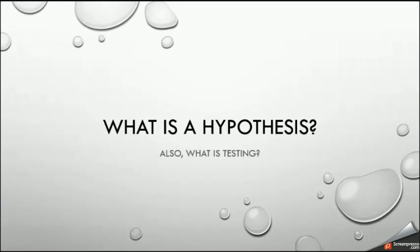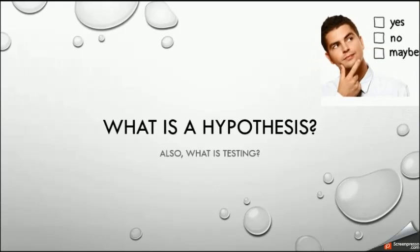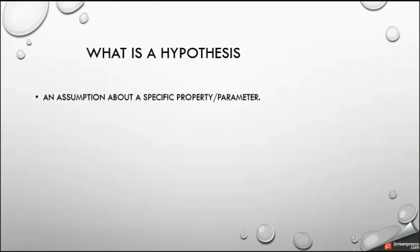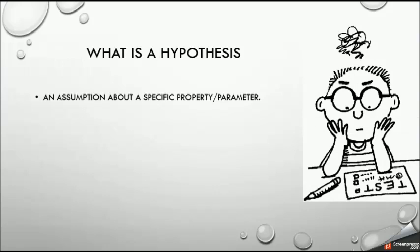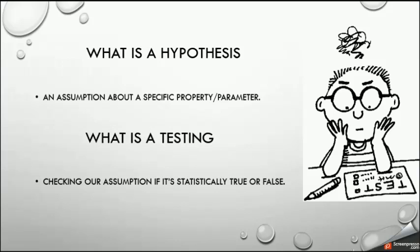This is the first lesson on describing the statistical hypothesis. We are going to define what a hypothesis is and what testing is. A statistical hypothesis is not more than an assumption. Our hypothesis is a description of some assumption about a parameter in some distribution or population — for example, an assumption about the mean or the variance. So a hypothesis is exactly an assumption about a property or a parameter in a population or a distribution.